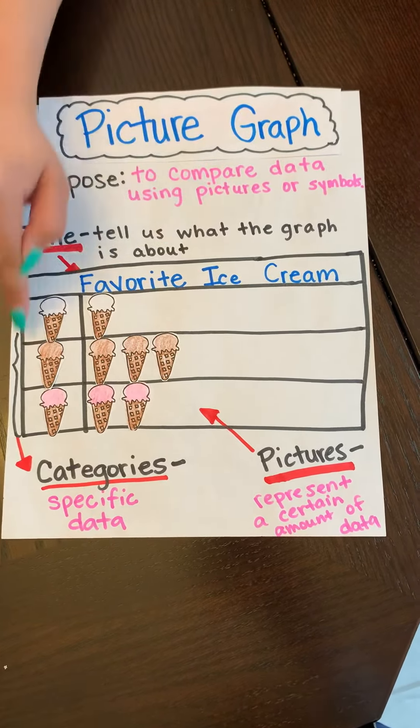Right here we have vanilla ice cream, chocolate, and strawberry. Right here are the categories. The categories show the specific data.